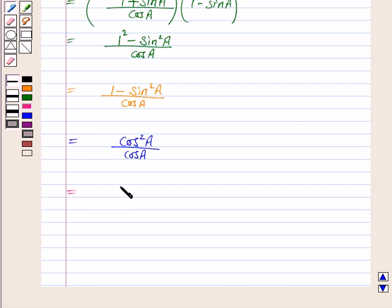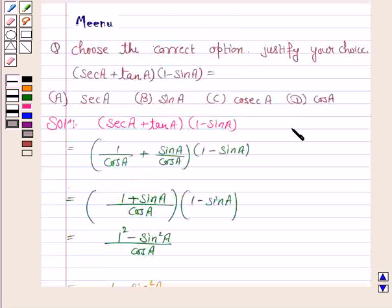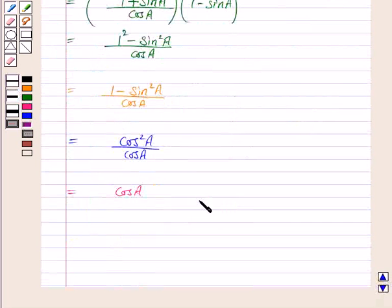So this is equal to cos A. So the correct option is option b. So option d is the required answer.